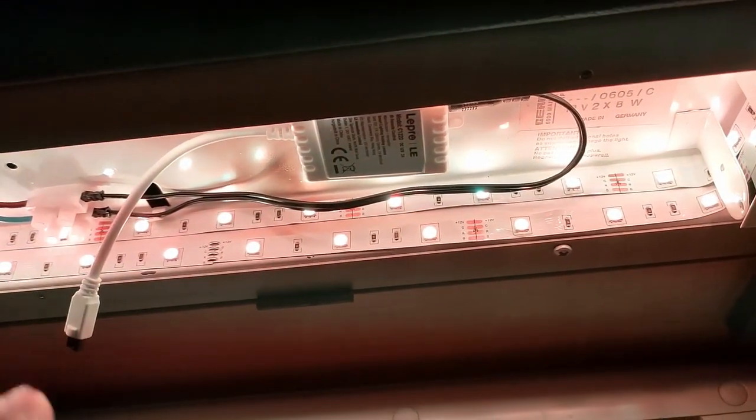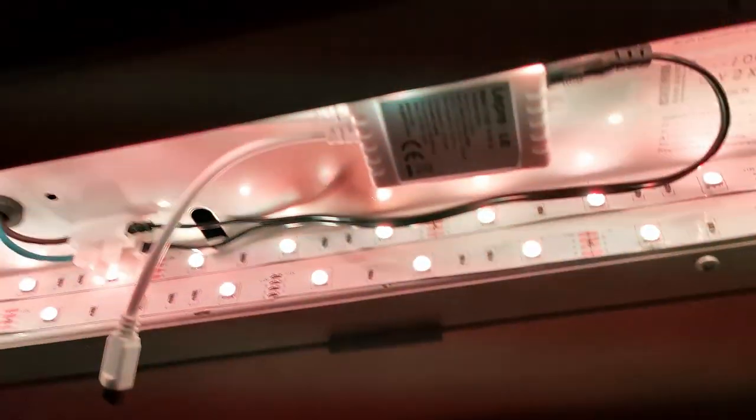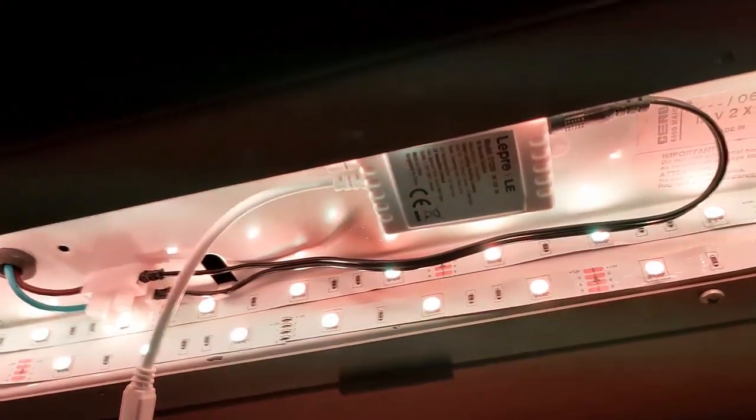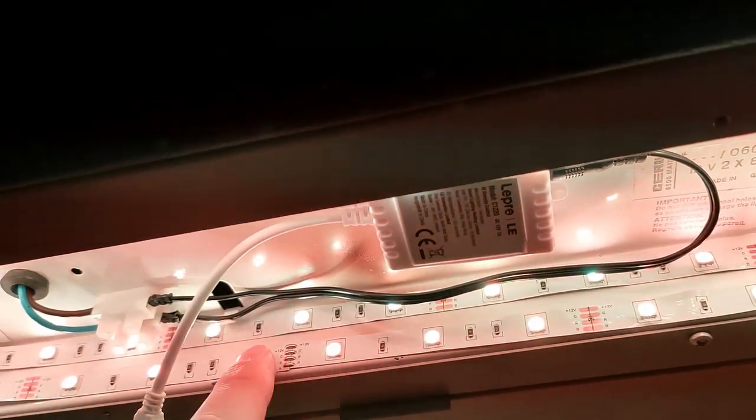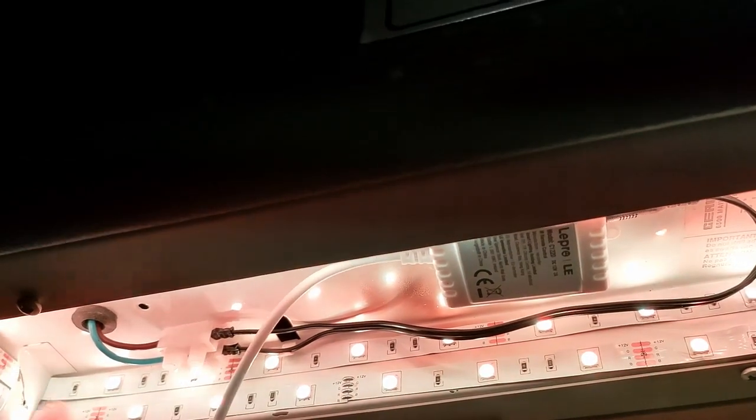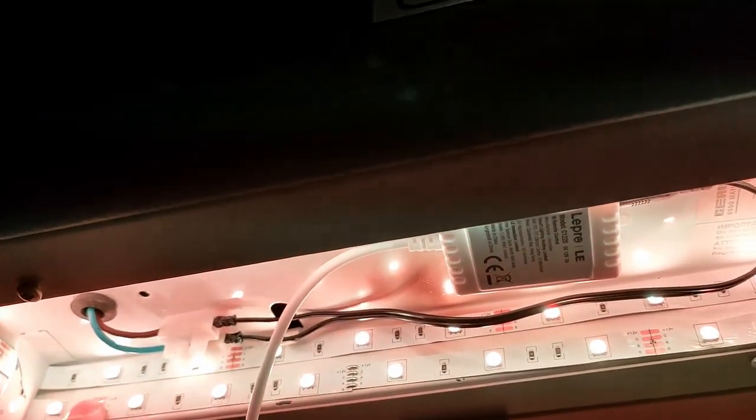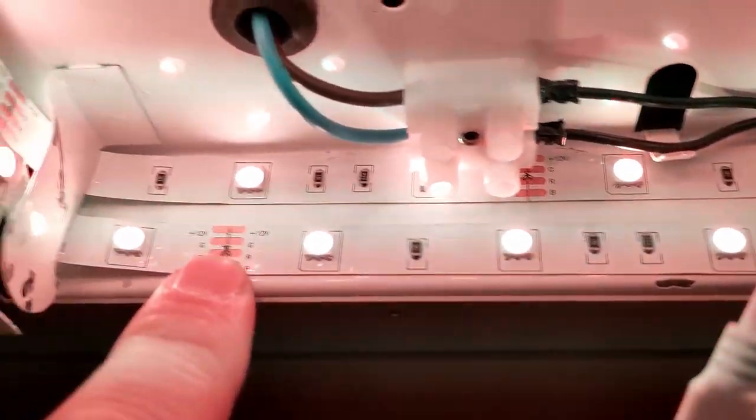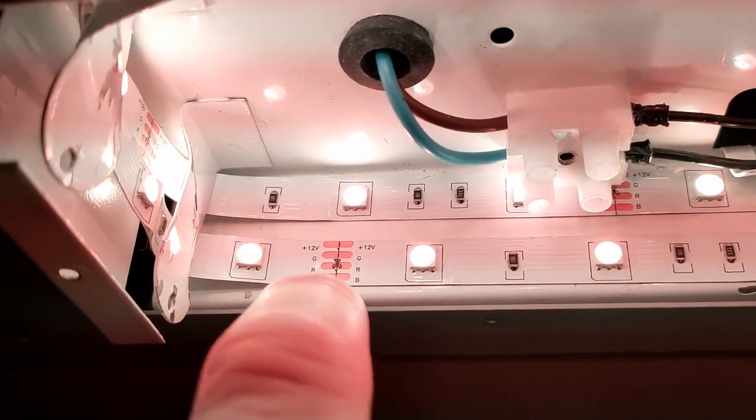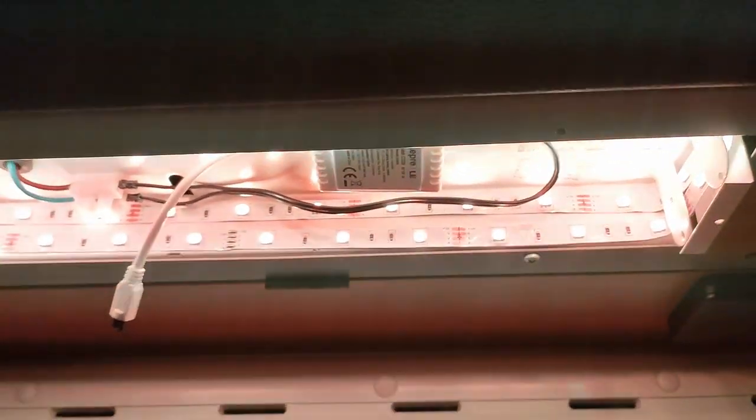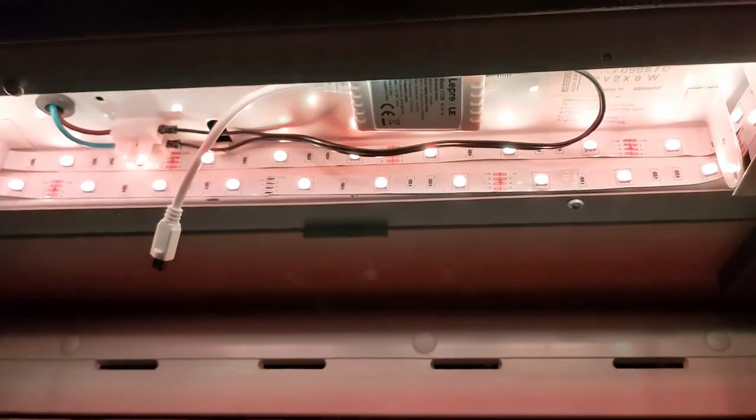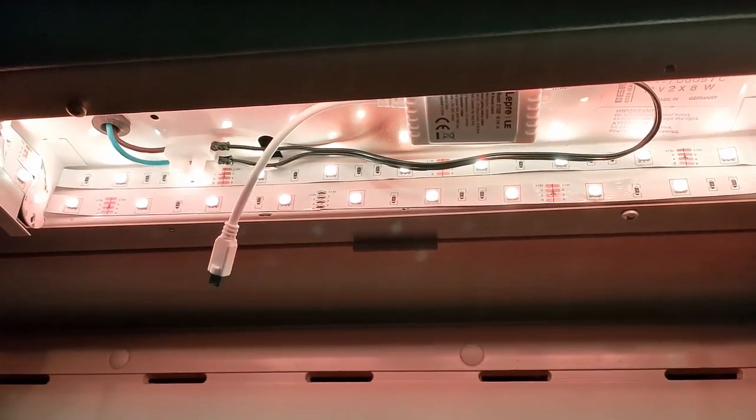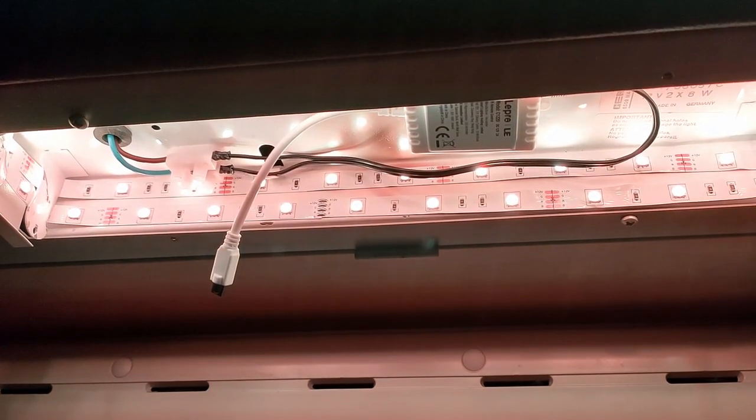And then you just connect the strip to your dimmer and, you know, I went for two lines here. So one bottom and one at the top. So I have a bit of light. And as you can see here, you always have those marks where you are allowed to cut the LED strip. And, of course, I don't want to use five meters for this one here. It doesn't really make sense. So, and that's pretty much it.